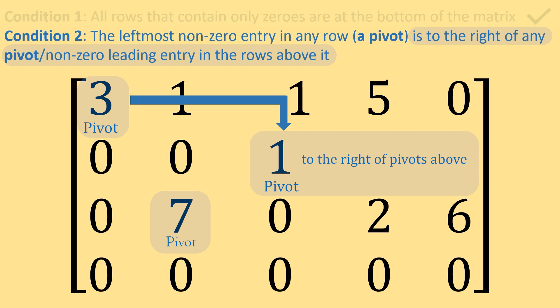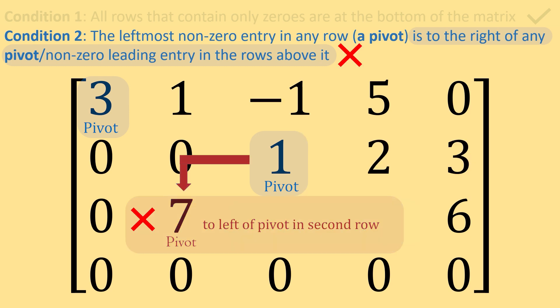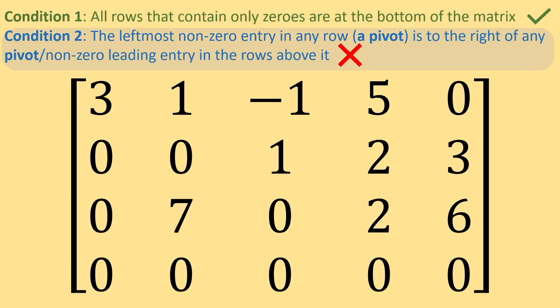1 is to the right of 3, so no issue there. 7 is to the right of 3, but 7 is not to the right of 1. The pivot of our third row is not to the right of every pivot in the rows above it. This is not in row echelon form, because we do not satisfy the second condition.